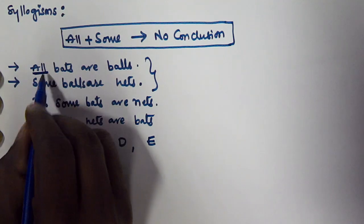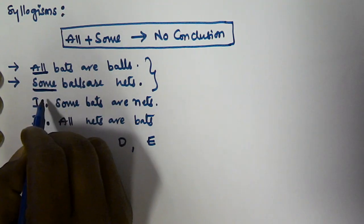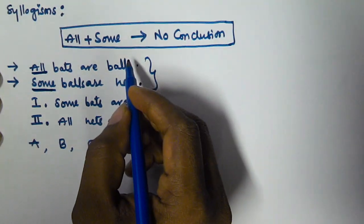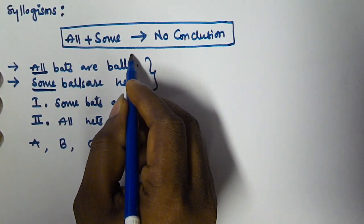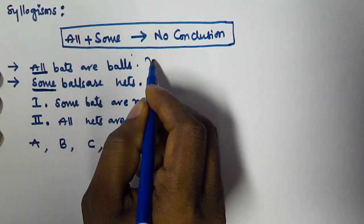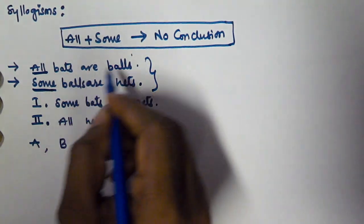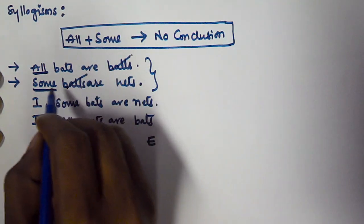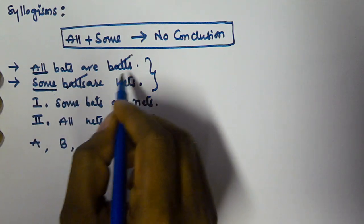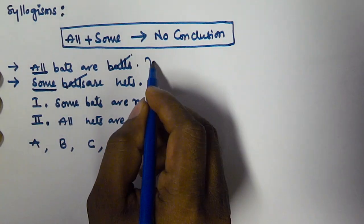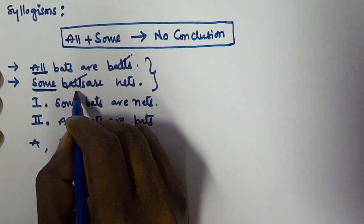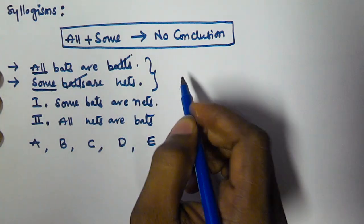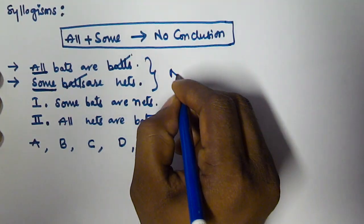The first statement starts with 'All' and the second starts with 'Some,' so All plus Some gives no conclusion — when the predicate of the first statement and the subject of the second statement are equal. Here both are 'balls,' so the predicate of the first and subject of the second are equal, meaning we cannot conclude anything.